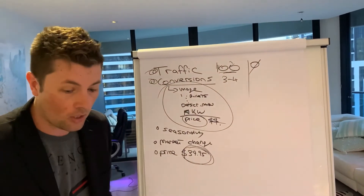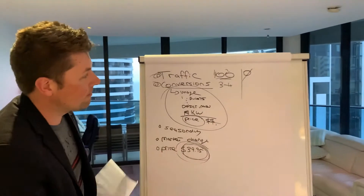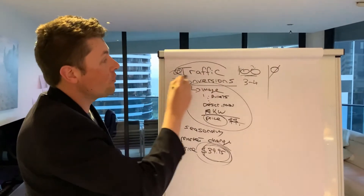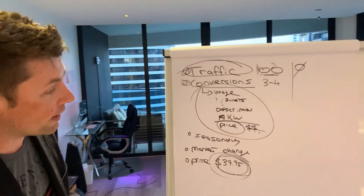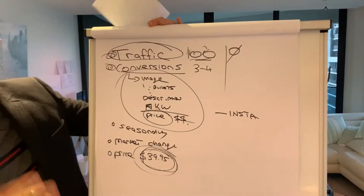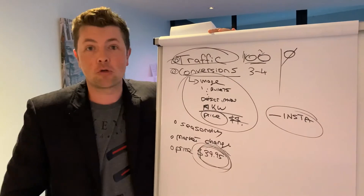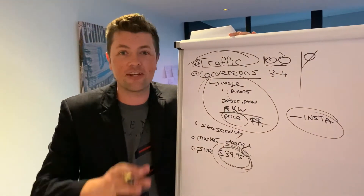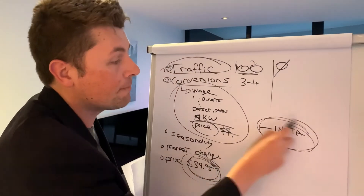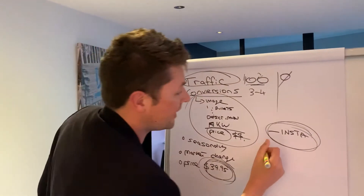Once you've identified whether you have a traffic problem or conversion problem, figure out what you can do to improve. If you have a traffic problem, there are a few things you can do. Number one, reach out to Instagram influencers. If you have a pet product, baby product, or parenting product, you can find people on Instagram talking about it. Contact those people and find out if they'll promote the product in exchange for a free sample.